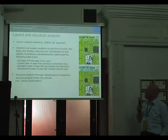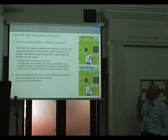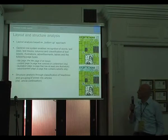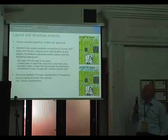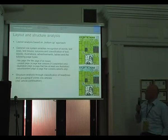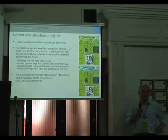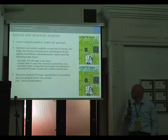We have a general rule system that enables the recognition of words, text lines, text blocks, and also columns. We classify these blocks as text blocks, illustrations, advertisements, and so on. Especially in this project, we will also have page classification — we recognize the title page, content page, illustration page, and advertisement page. Later on, you could use these page types for browsing or searching the content.